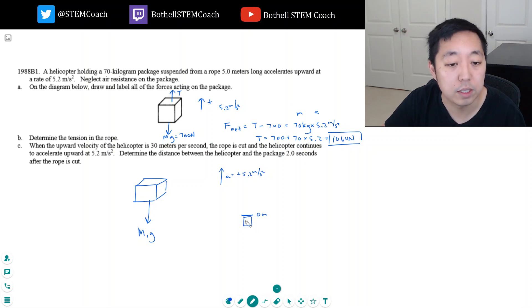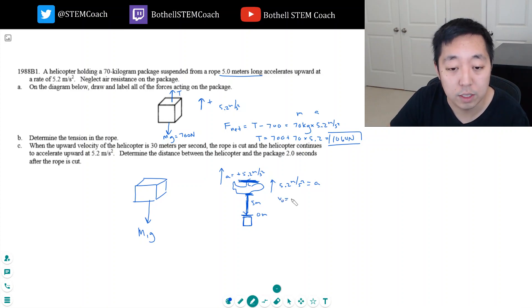This is where the box is, at zero meters. The helicopter is above at five meters because they told you the rope is five meters long. So the helicopter's at five meters and it's accelerating up at 5.2 meters per second squared. Now this guy is going to start moving too. The thing is, they both have an initial velocity of 30 meters per second. The moment it's cut, they both have 30 meters per second.